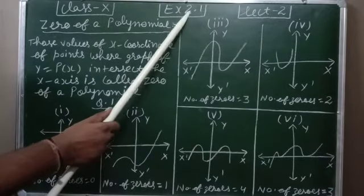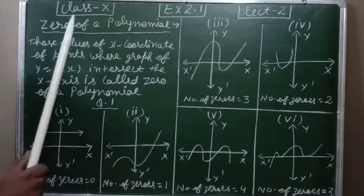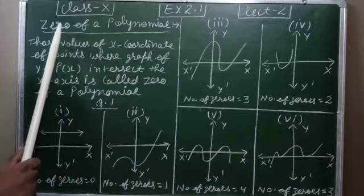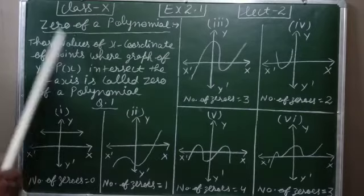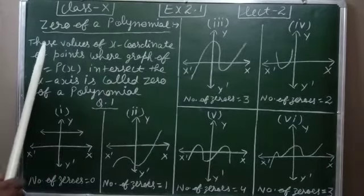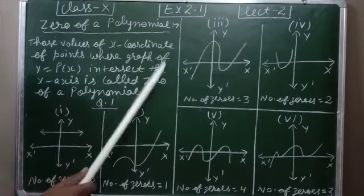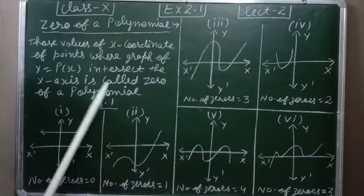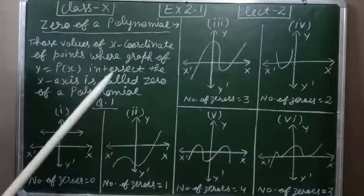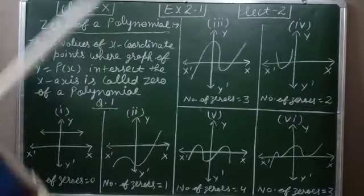Let us start the first exercise of Chapter 2, that is Exercise 2.1. The concept here is zeros of a polynomial. When we study Chapter 4, the word 'zero' is replaced by 'roots' — the root word applies when a quadratic equation is there, and the zero word applies when a polynomial is there. Those values of x at the coordinates of points where the graph of y = p(x) intersects the x-axis are called zeros of a polynomial.